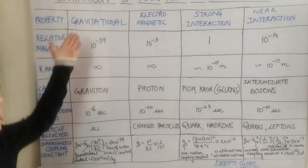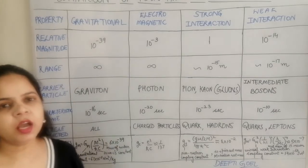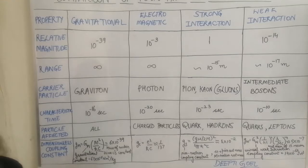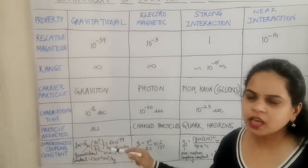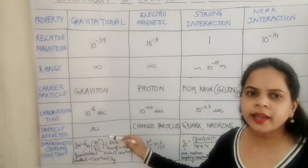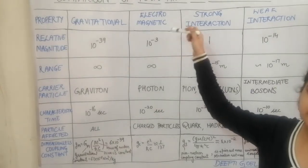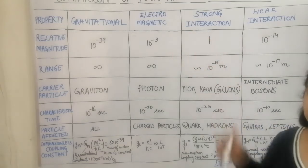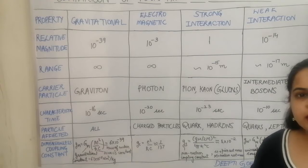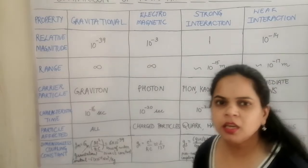The gravitational interaction is present in all types of particles which have mass or inertia — all particles are subject to gravitational interaction. For the electromagnetic interaction, 'electro' refers to electric field and 'magneto' refers to magnetic field. The electric or magnetic field is only applicable to particles which have charges, so charged particles are the ones having electromagnetic interactions.